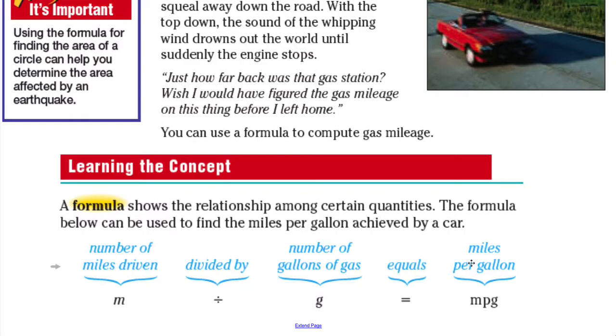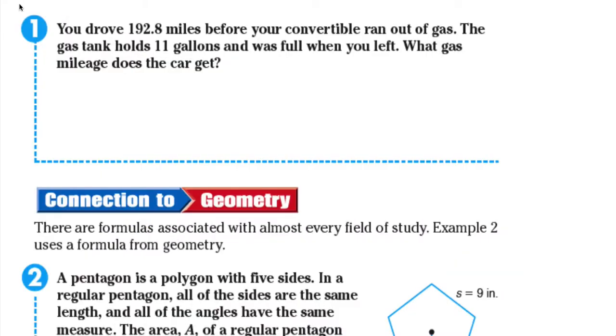Okay, to be able to find or compute for gas mileage. Let's take a look at example one. For example one we drove 192.8 miles before the convertible ran out of gas. The gas tank holds 11 gallons and was full when we left. What gas mileage does the car get?